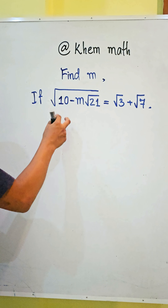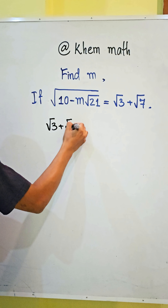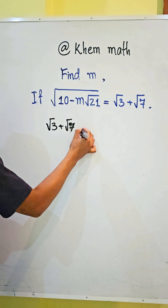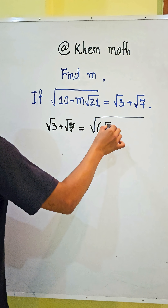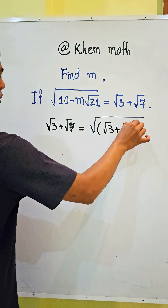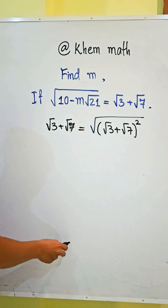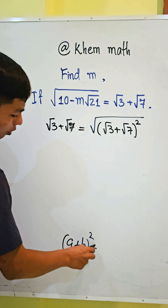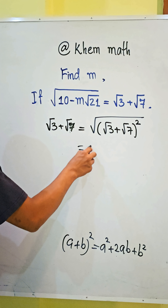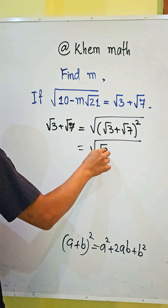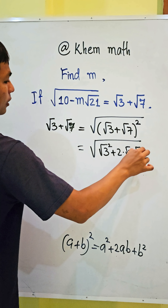First, we square both sides. We use the formula (a plus b) squared equals a squared plus 2ab plus b squared applied to (square root 3 plus square root 7) squared, giving square root 3 squared plus 2 times square root 3 times square root 7 plus square root 7 squared.